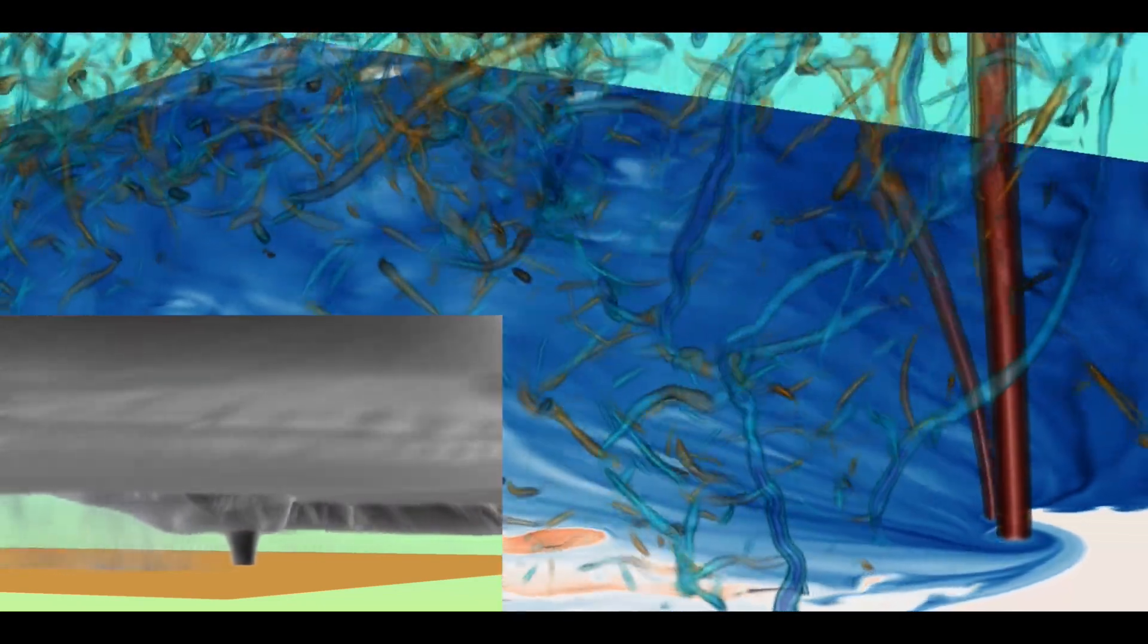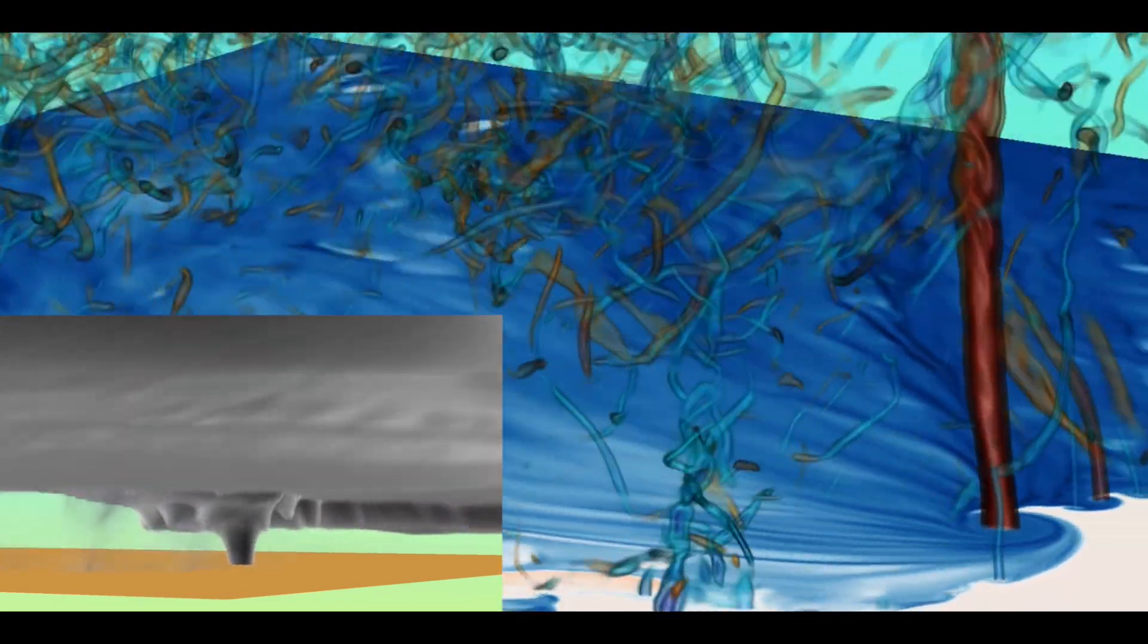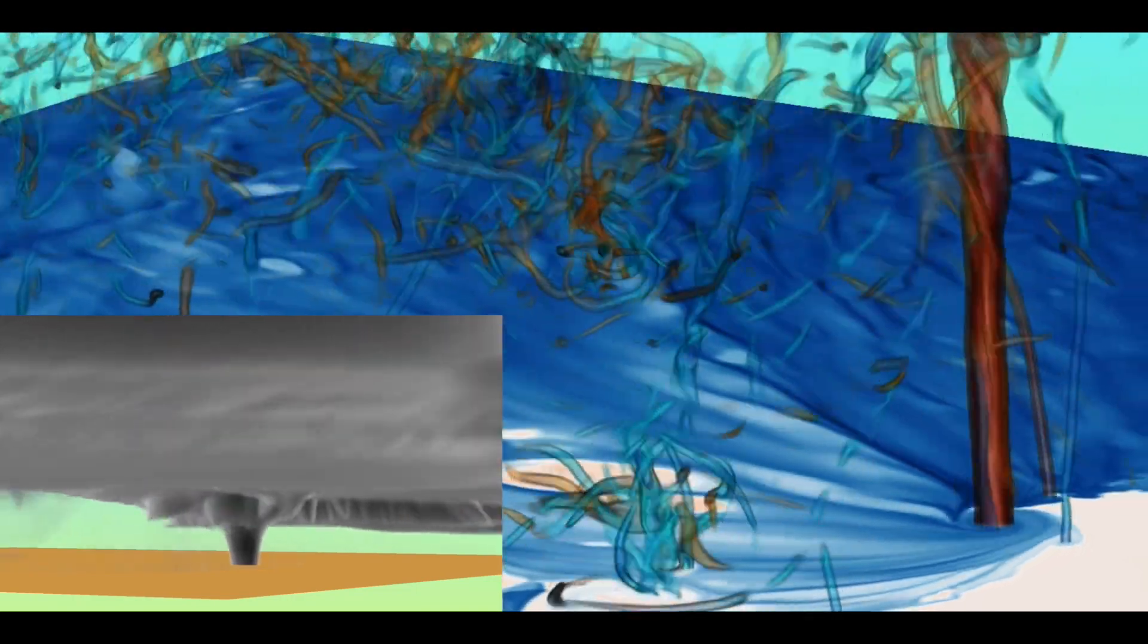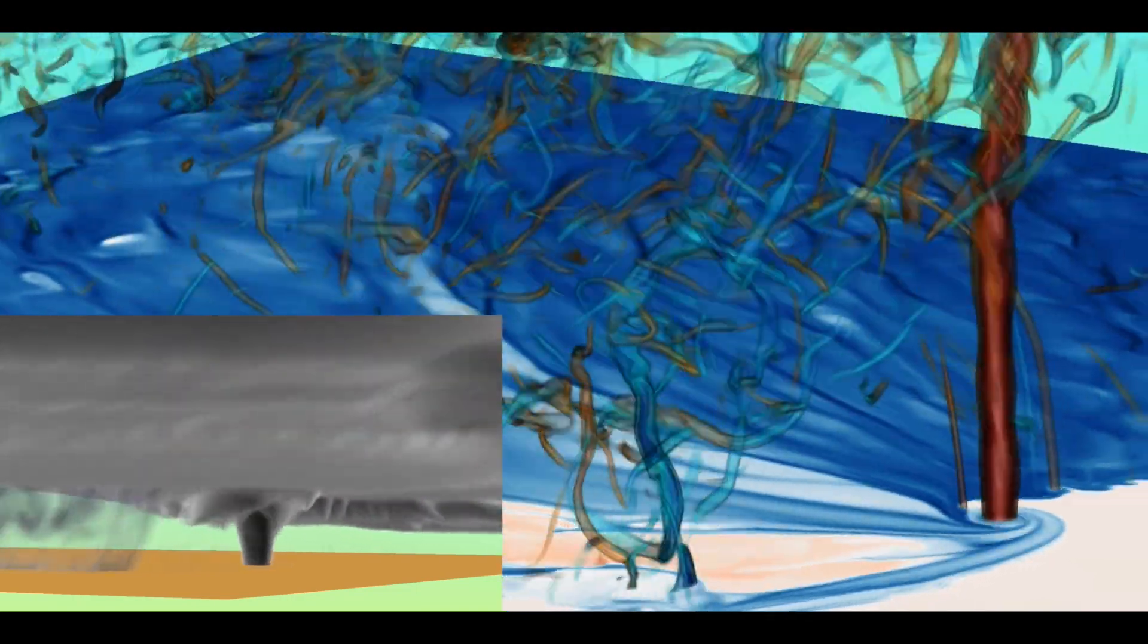So here's the vorticity field. You see all these little, what are called misocyclones, very small-scale vortices that actually get absorbed into the main tornado. This has never been seen with this kind of fidelity. But what you don't see is what's going on, and I'll be showing you shortly, up in the upper part of the tornado cyclone.